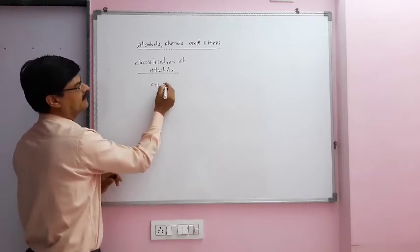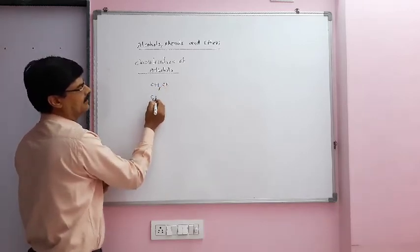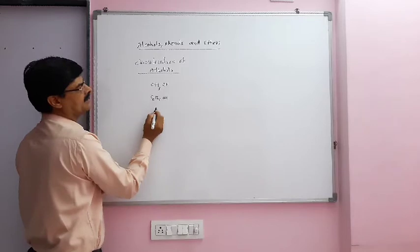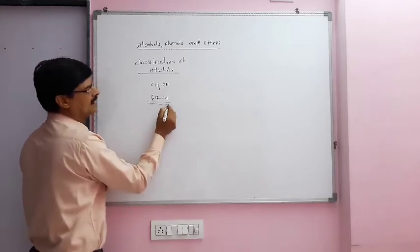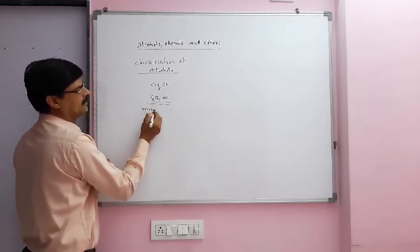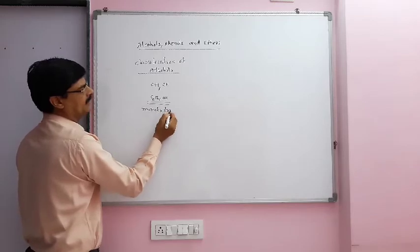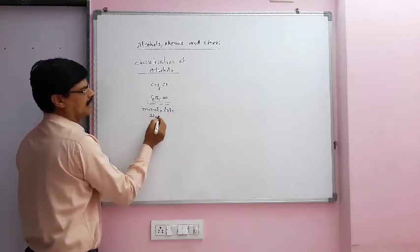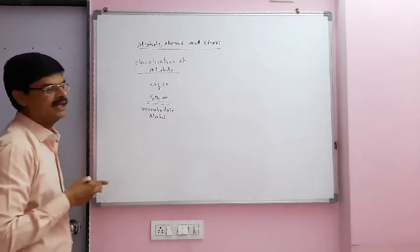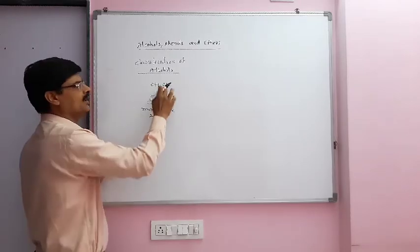Say CH3OH, C2H5OH. These two are cases of monohydric alcohol. Monohydric alcohol contains only one OH.